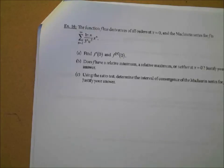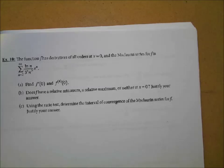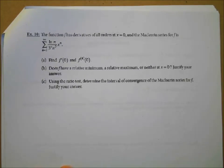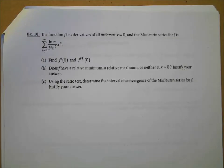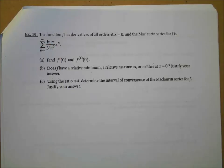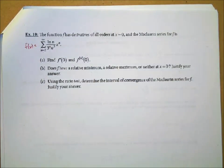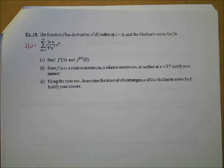Let's flip over to our last example. The function f has derivatives of all orders at x equals zero and the Maclaurin series for f is given. Rather than us writing out the first four terms and coming up with the series, they gave us the series written out in summation notation. This infinite sum is precisely equal to f of x. We want to find F prime of zero and the fourth derivative of f at zero.